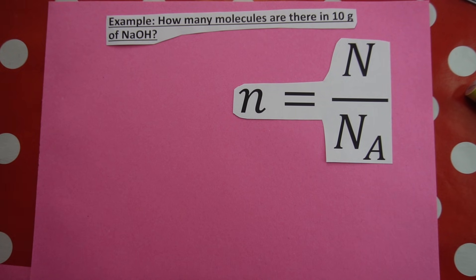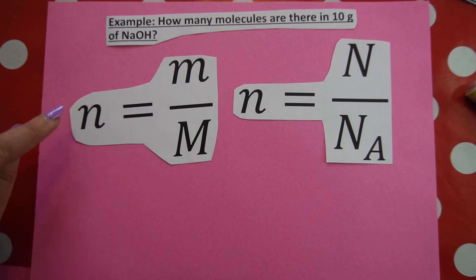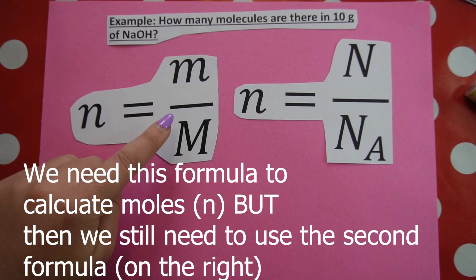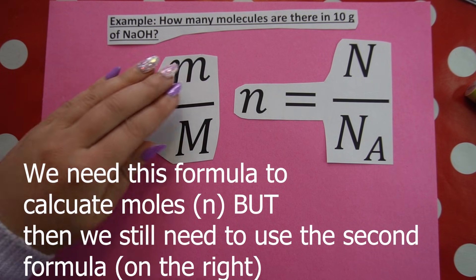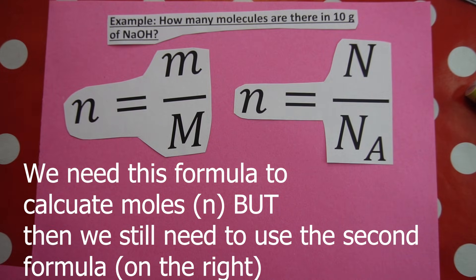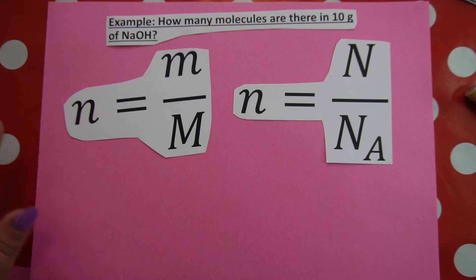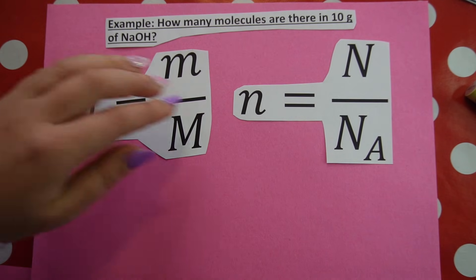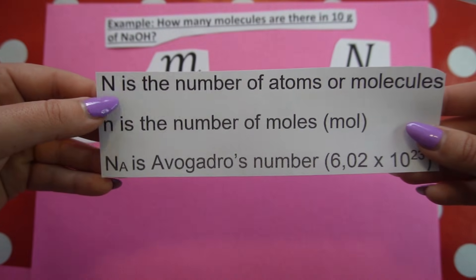Our first example reads: how many molecules are there in 10 grams of sodium hydroxide? The formula on the left uses mass in grams and molar mass to calculate number of moles — but we're not looking for number of moles as our final answer. We'll use that formula for part one, but we can't stop there. If we stop there, we would have calculated N, but N is number of moles, not number of molecules. We then have to use number of moles in the second formula along with Avogadro's number to calculate big N — the number of particles, atoms, or molecules.